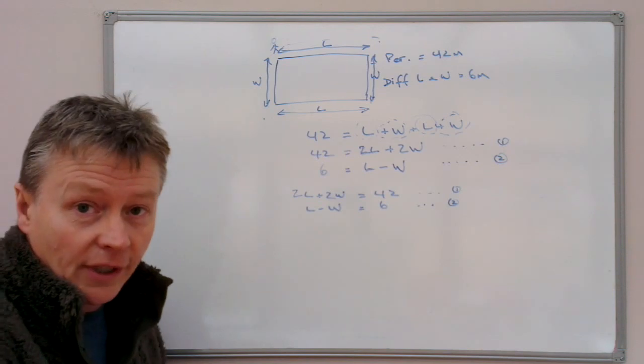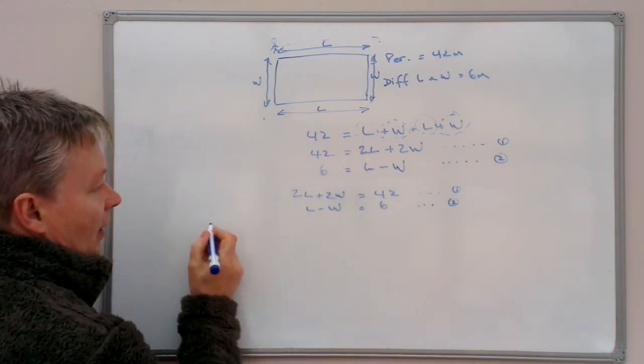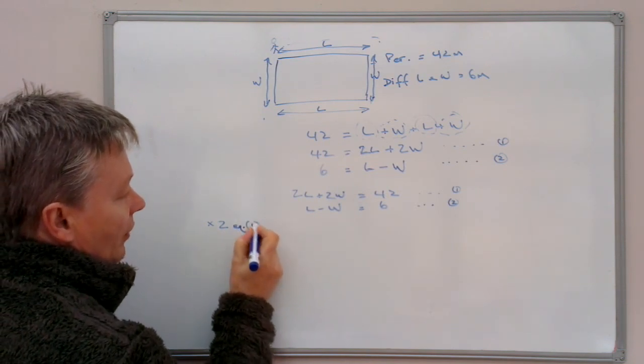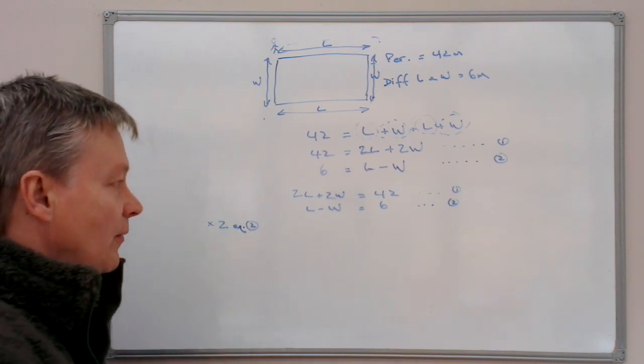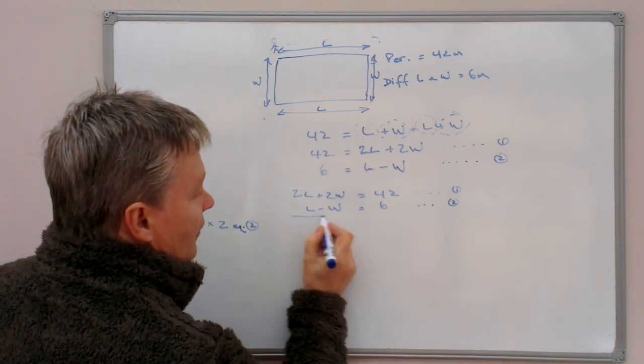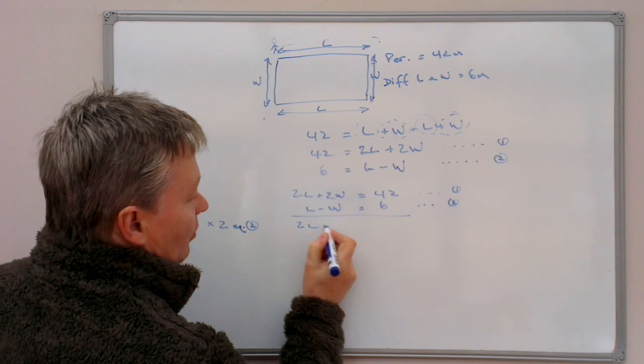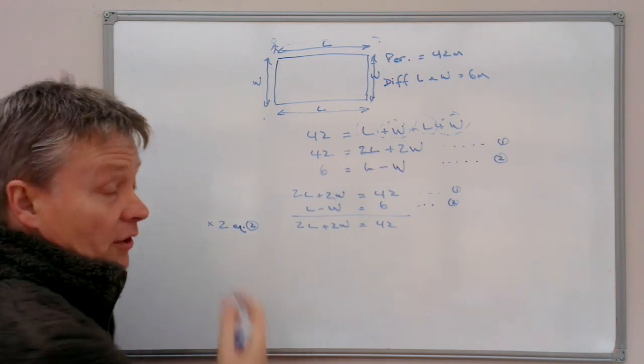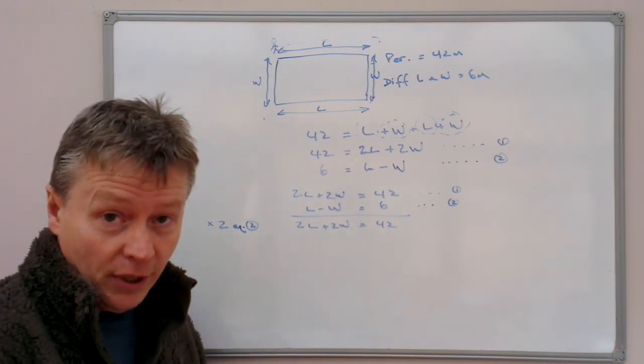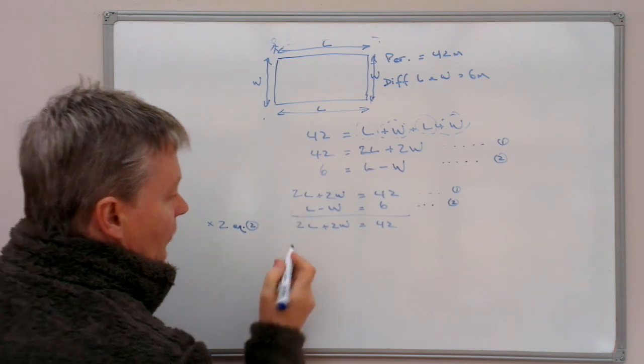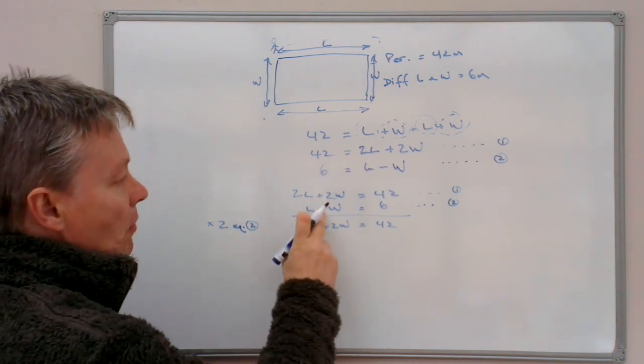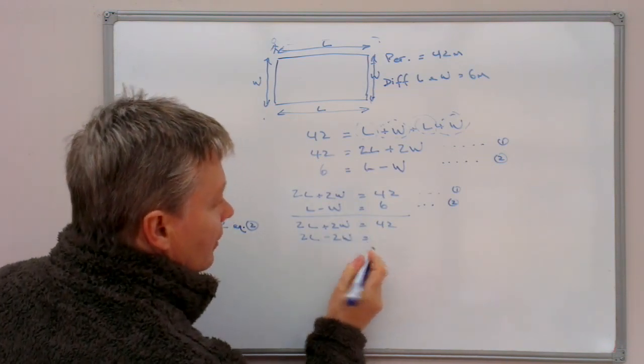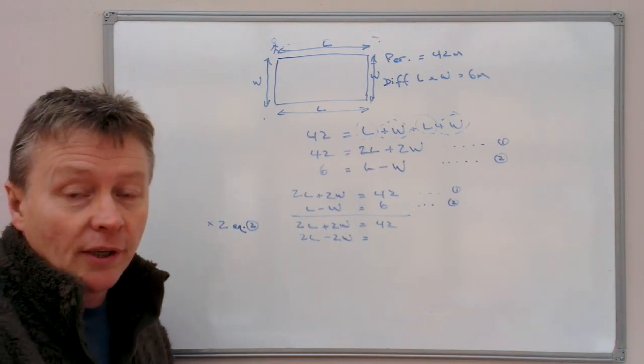And I'm just going to put a note in the corner here that I'm going to multiply by 2 equation two. So I'm going to leave equation one exactly the same. 2L plus 2W equals 42. And then with equation two, I'm going to multiply each of the terms by 2. So L then will become 2L. Minus W will become minus 2W. And 6 will become 12.